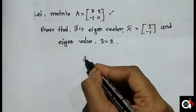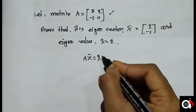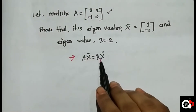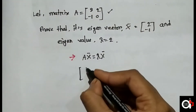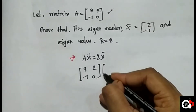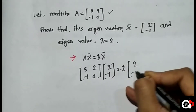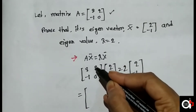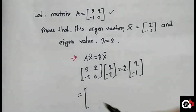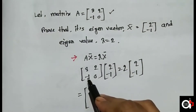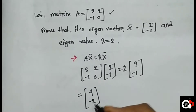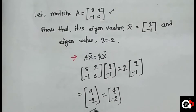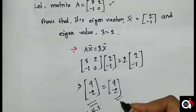We know the condition: if A into x equals lambda into x, we can verify this. We have matrix A as [3, 2; -1, 0], vector x as [2; -1], and lambda equals 2. Let's check: 3×2 + 2×(-1) = 6 - 2 = 4, and (-1)×2 + 0×(-1) = -2. On the right side, lambda times x gives [4; -2]. Left hand side equals right hand side.